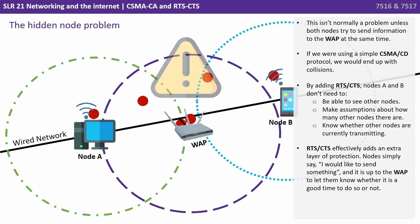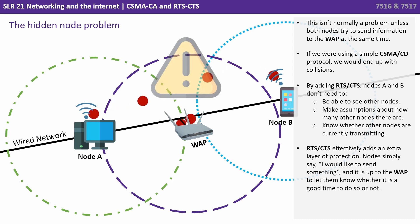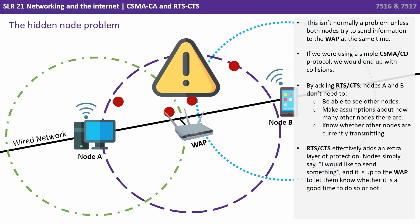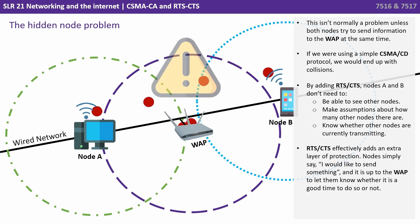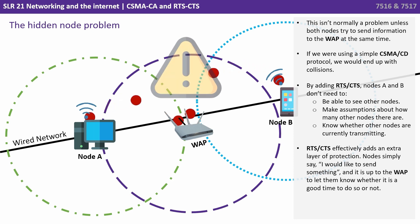If we're using a simple CSMA/CA protocol, we could end up with collisions. By adding RTS/CTS, nodes A and B don't need to be able to see other nodes, make assumptions about how many other nodes there are, or know whether other nodes are currently transmitting. RTS/CTS effectively adds an extra layer of protection. Nodes simply say 'I'd like to send something,' and it's up to the wireless access point to let them know whether it is a good time to do so or not.